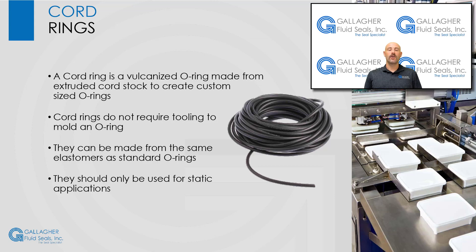A cord ring is a vulcanized O-ring made from extruded cord stock to create custom-sized O-rings. The advantage of a cord ring is that no tooling is required to create an O-ring that may not be a standard AS568 size. Gallagher Fluid Seals maintains an extensive inventory of many different elastomers in different cross-sections to manufacture custom-sized cord rings. Cord rings can be made from the same elastomer as standard O-rings, but should only be used in static applications. Different types of bonding processes can be utilized to improve the strength of the bond, but it will never perform as well as a molded O-ring.